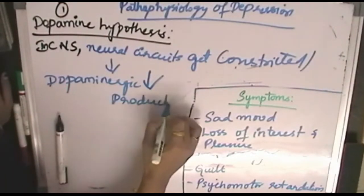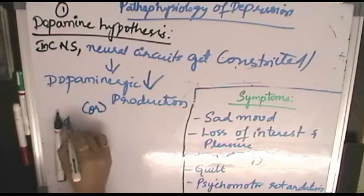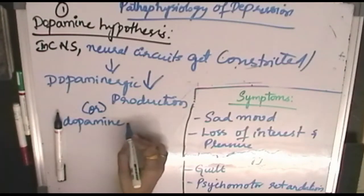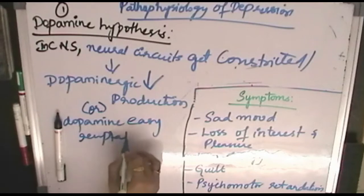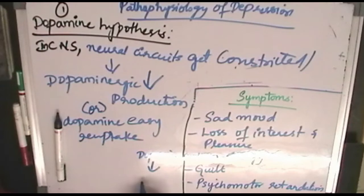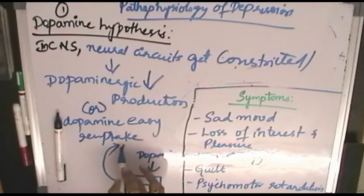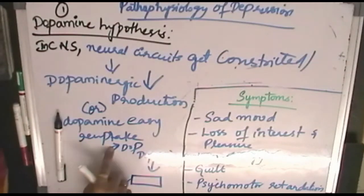This constriction leads to dopaminergic decreased production — dopaminergic hypoproduction — or dopamine easy reuptake. Reuptake means dopamine released by dopa decarboxylase gets recycled or reuptaken for the next synthesis of dopamine. So dopamine, without fully showing its function, is easily reuptaken for the synthesis of another molecule.